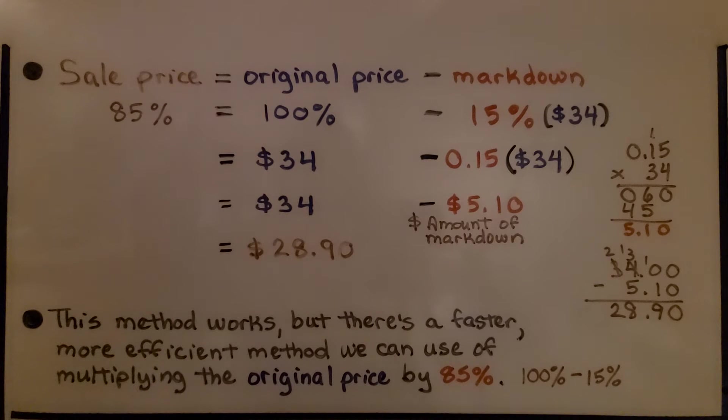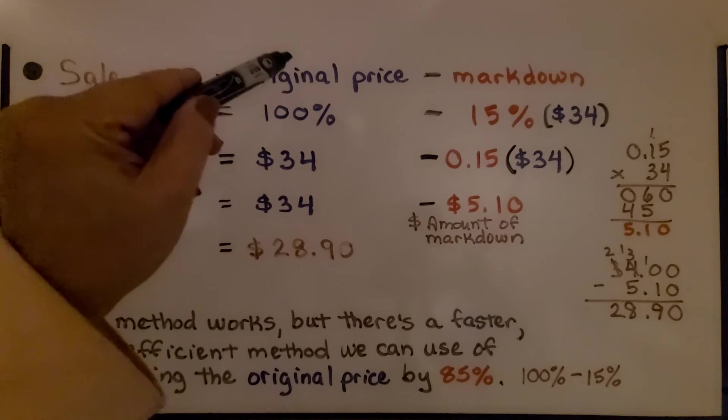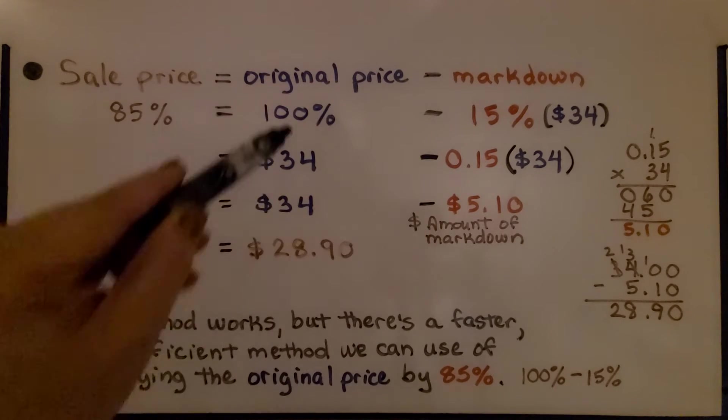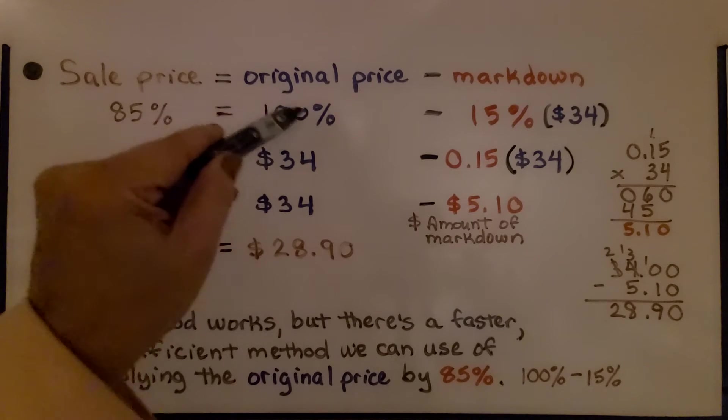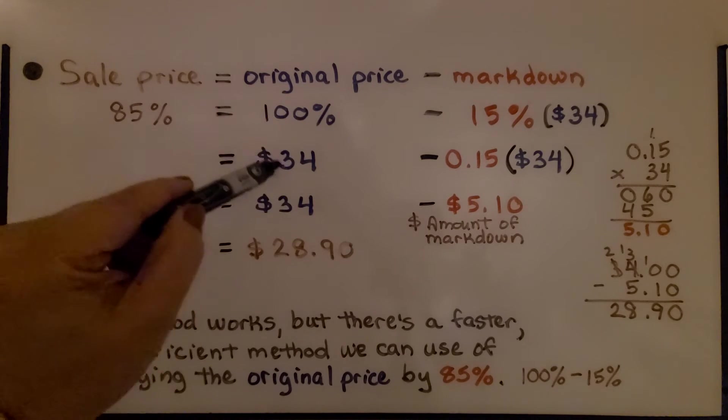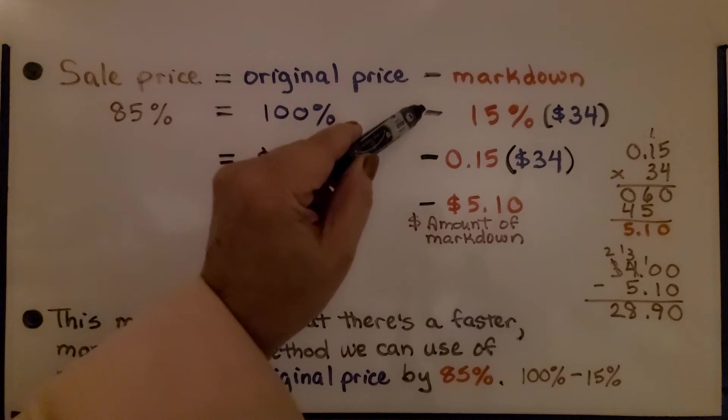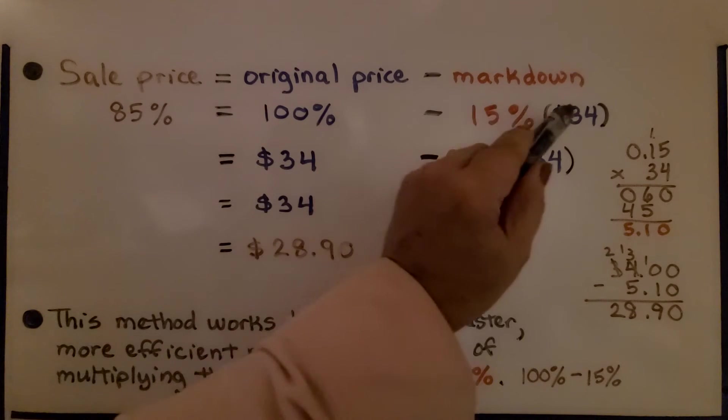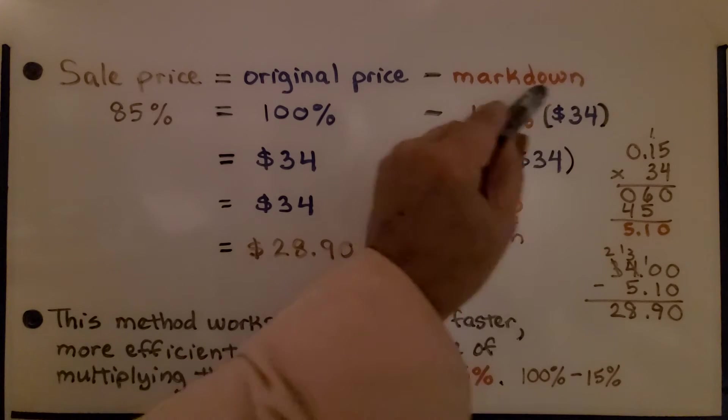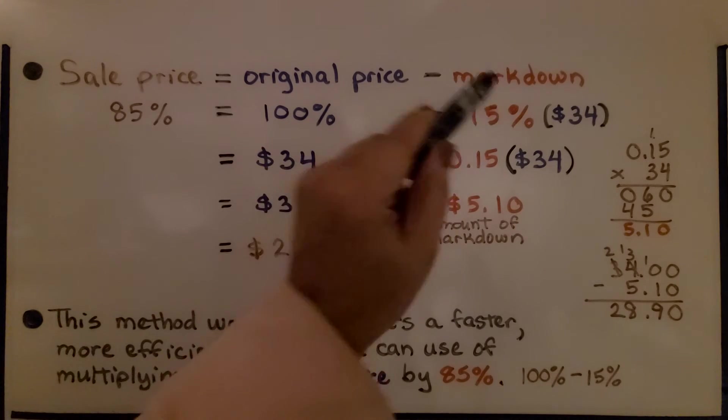So if we're working with the $34 pair pants, we've got the sale price. That retail sale price is going to equal the original price minus the markdown. The original price is 100%. That's 100% of $34. So it's the whole thing. We're going to subtract 15% times that $34 to find what 15% of $34 is.